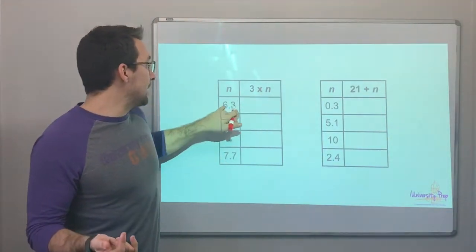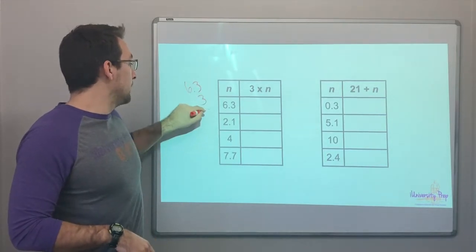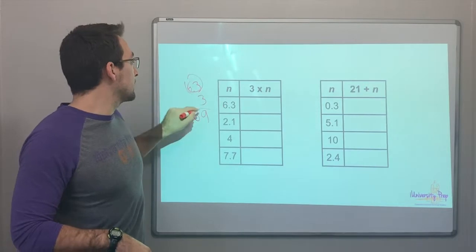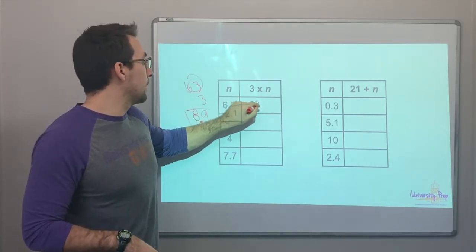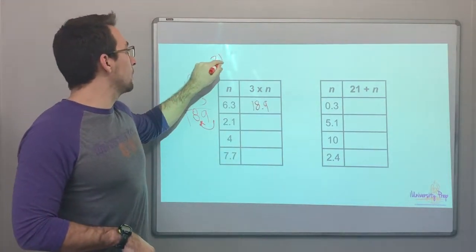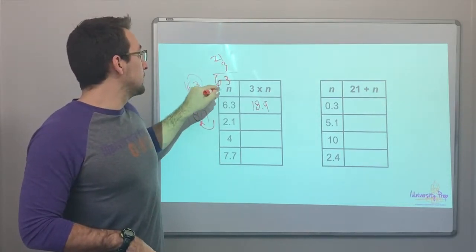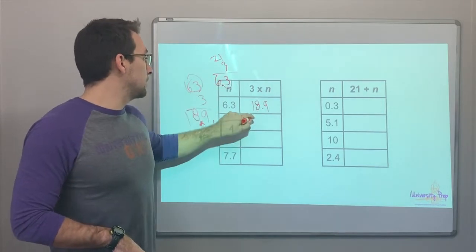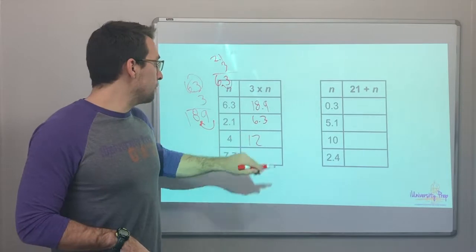So, 3 times n is 6.3. What's 6.3 times 3? 9 and then 18, 18. One decimal number. So, there's going to be one decimal number here. 18.9. 2.1 times 3. 3, 6, 63. And there's one decimal. So, it's going to be 6.3. 4 times 3 is 12. Great.